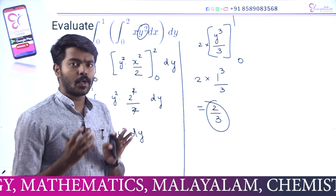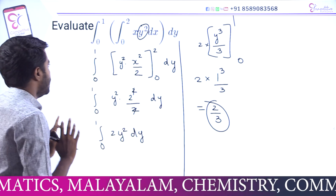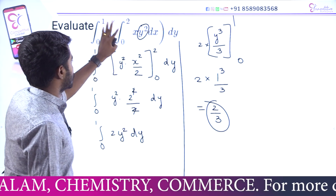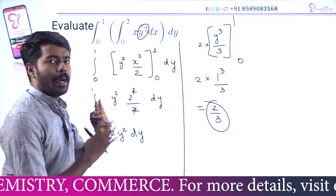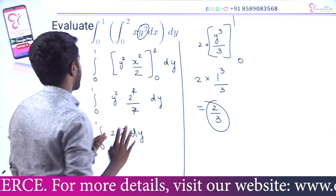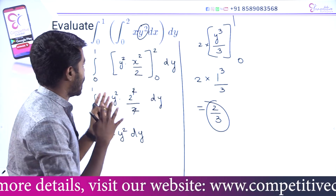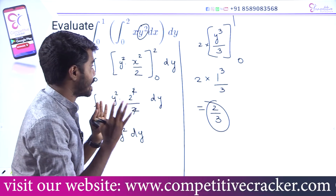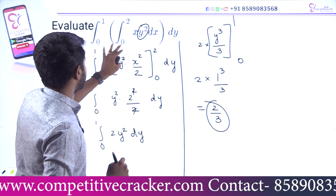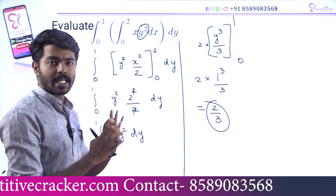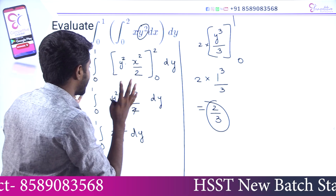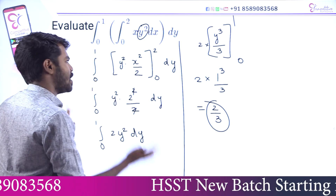Now there is another method. When the limits are constant and we have a product of functions — f(x)·g(y) — with separate dx and dy, we can separate the integral. This is direct integration — we split it into two independent integrals.